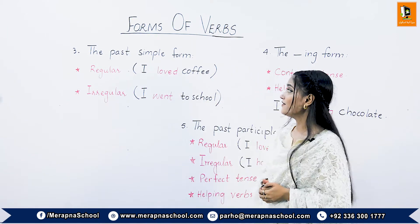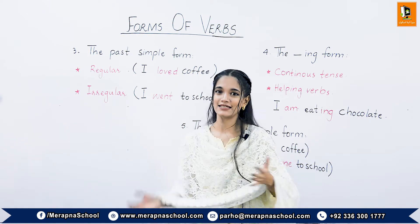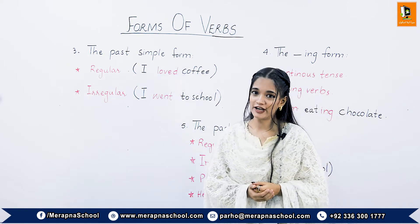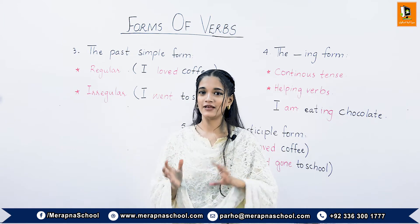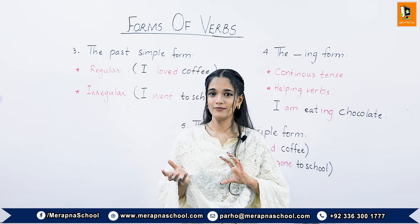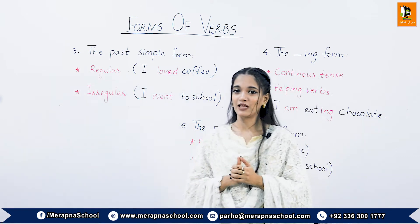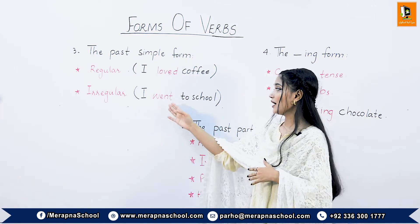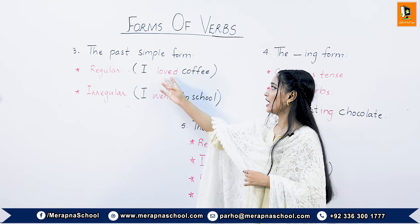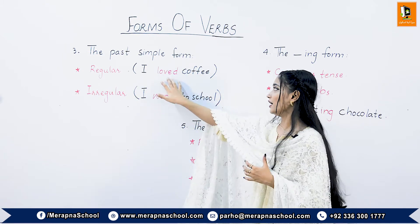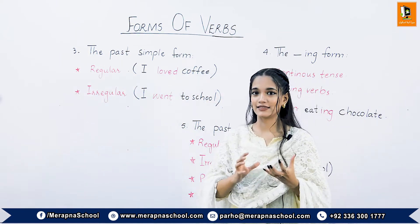The third form is the past simple form. As its name suggests, it is used in the past simple tenses. They can be regular or irregular. The regular form is added with 'ed' to the base form to make it the simple past form. The irregular form is totally different from the base form, like 'I went to school.' For the regular form, the example is 'I loved coffee' — 'ed' is added to the base form 'love.'